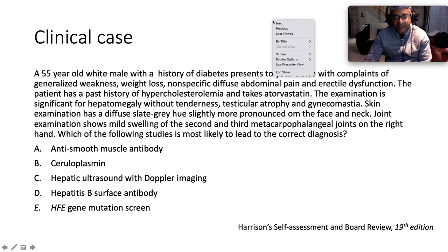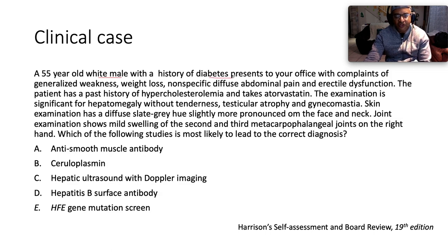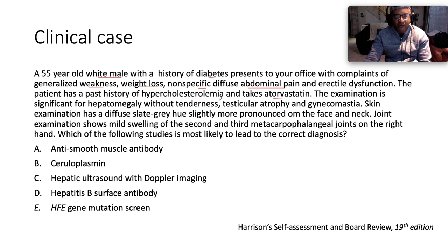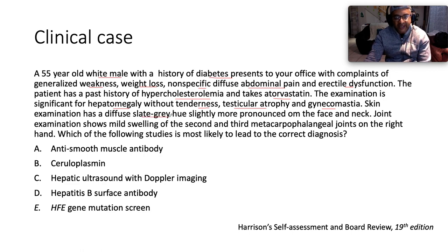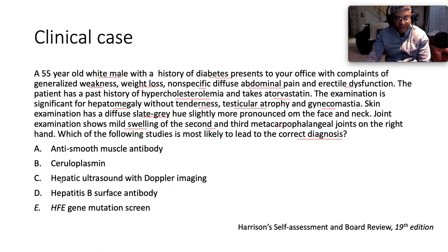We have a 55-year-old white male with a history of diabetes presenting with complaints of generalized weakness, weight loss, non-specific diffuse abdominal pain, and erectile dysfunction. He has a past history of hypercholesterolemia and takes atorvastatin. Examination is significant for hepatomegaly without tenderness, testicular atrophy, and gynecomastia — suggestive of chronic liver disease. Skin examination shows a diffuse slate-gray hue, slightly more pronounced on the face and neck. Joint examination shows mild swelling of the second and third metacarpophalangeal joints on the right hand.